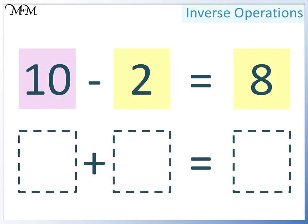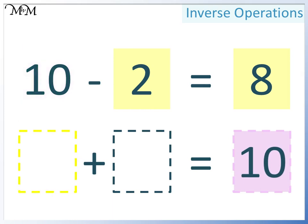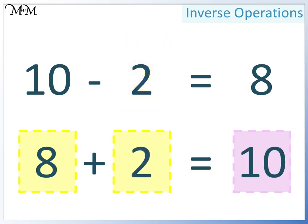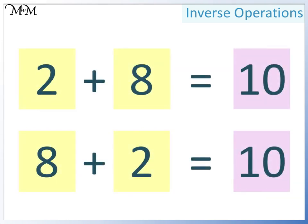There is another way that we can write this as an addition. We just need to make sure that we have two smaller numbers adding together to make a larger number. That larger number is still 10. This time we will have 8 first, so in the next space we must have 2. 8 plus 2 equals 10. So our addition calculations are 2 plus 8 equals 10 and 8 plus 2 equals 10. The order of the two smaller numbers doesn't matter because they still add together to make the larger number.